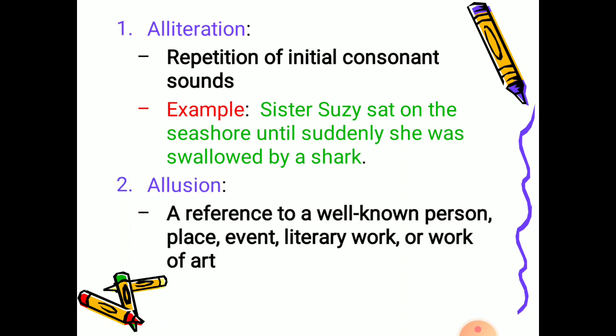Next is allusion. It is a reference to a well-known person, place, event, literary work, or work of art. It does not describe in detail the person or the thing to which it refers — it is just a passing comment.